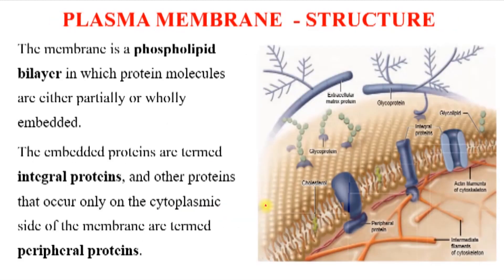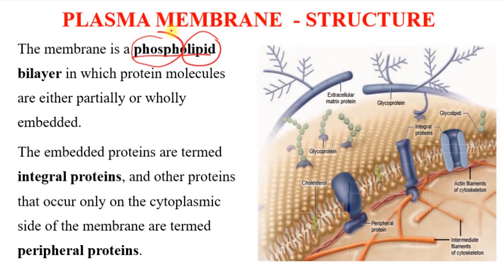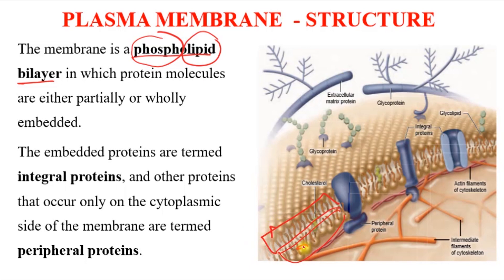Let's look at the structure of the plasma membrane. The term 'phospholipid' comes from a phosphate group and a lipid attachment. We have two of those, hence we call it a bilayer. A close look at the image on the screen shows one section up here and another section down there — one layer on top and one layer on the bottom. When we talk of a bilayer, we are talking about two layers: one up and one down.